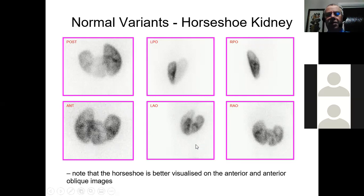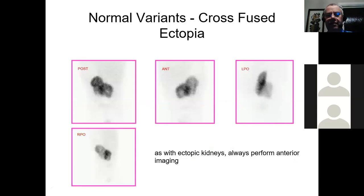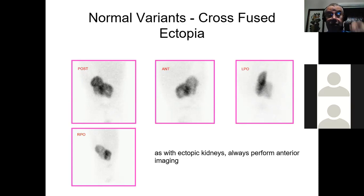Anterior oblique views are also quite nice. If you want to look at divided function, you have to decide exactly where you're going to draw your left and right regions and try to be consistent between scans. Another variant is cross-fused ectopia. In embryology the kidneys evolve in the pelvis and move up into their position, but sometimes the two renal buds start on the same side and you effectively get two normal kidneys, one on top of the other, fused together. To get a good view we recommend doing both posterior and anterior views, as one kidney may lie more anterior than normal.